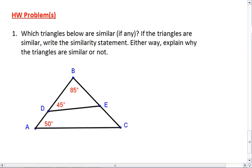Whether you find similar triangles or not, either way, I want you to explain why the triangles are similar or not. This does not need to be a proof. I want you to construct an informal argument that tells me why they're similar or why they wouldn't be similar.